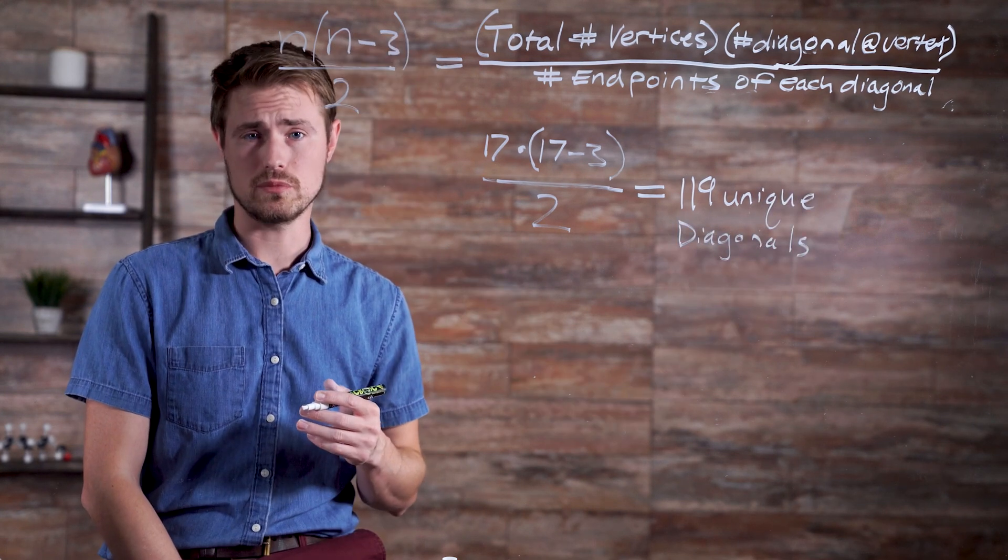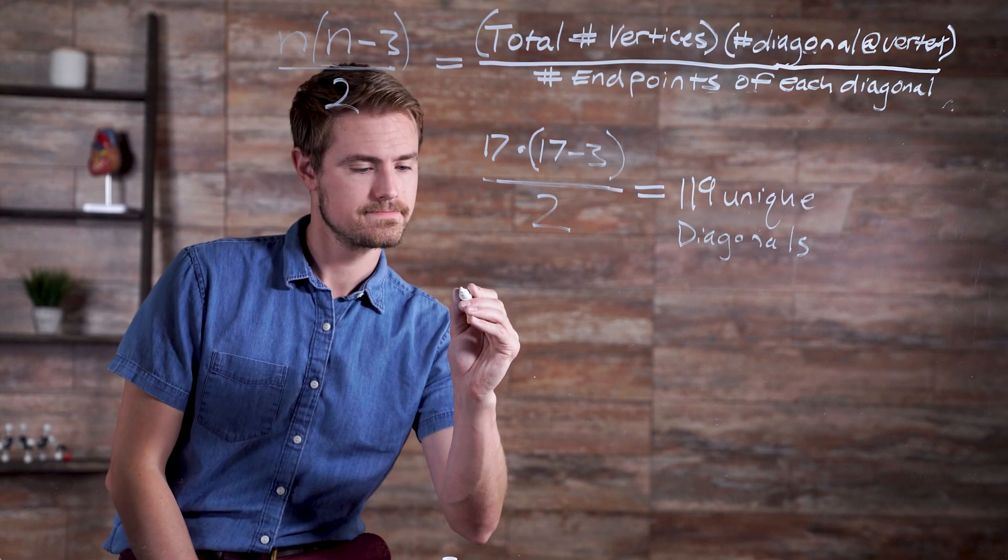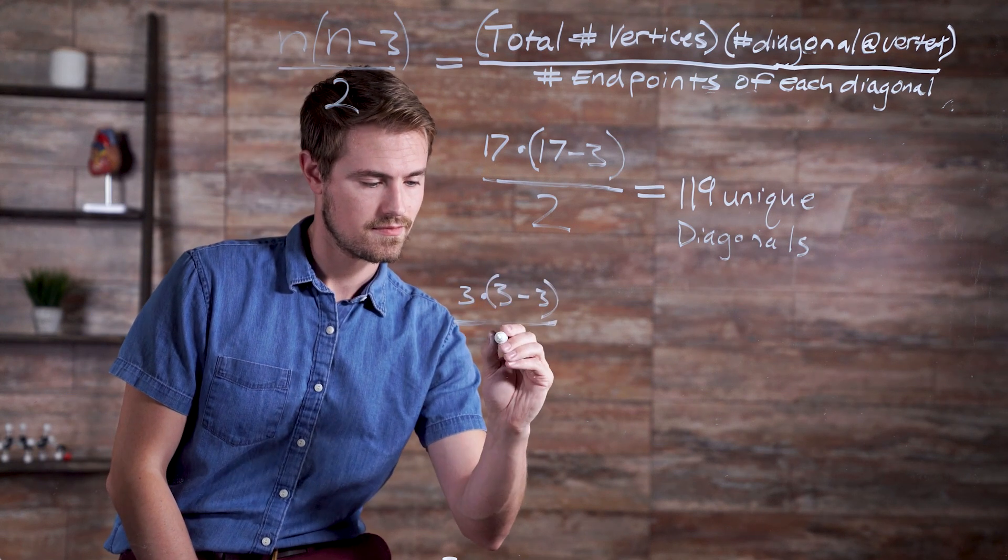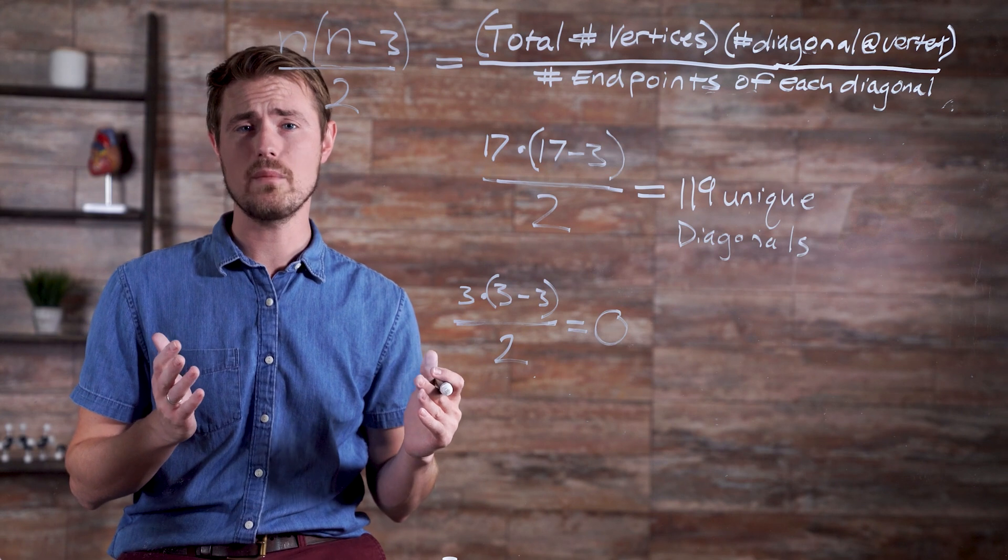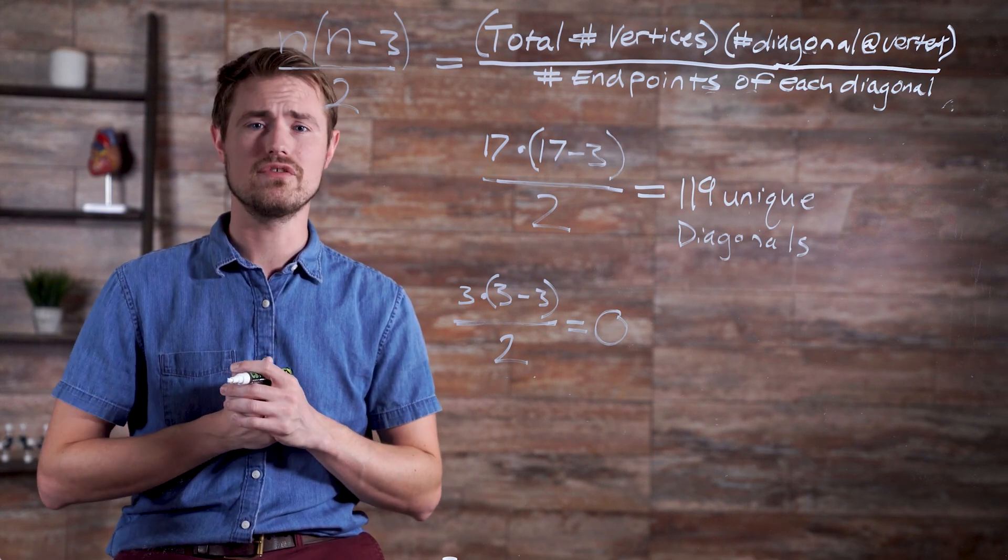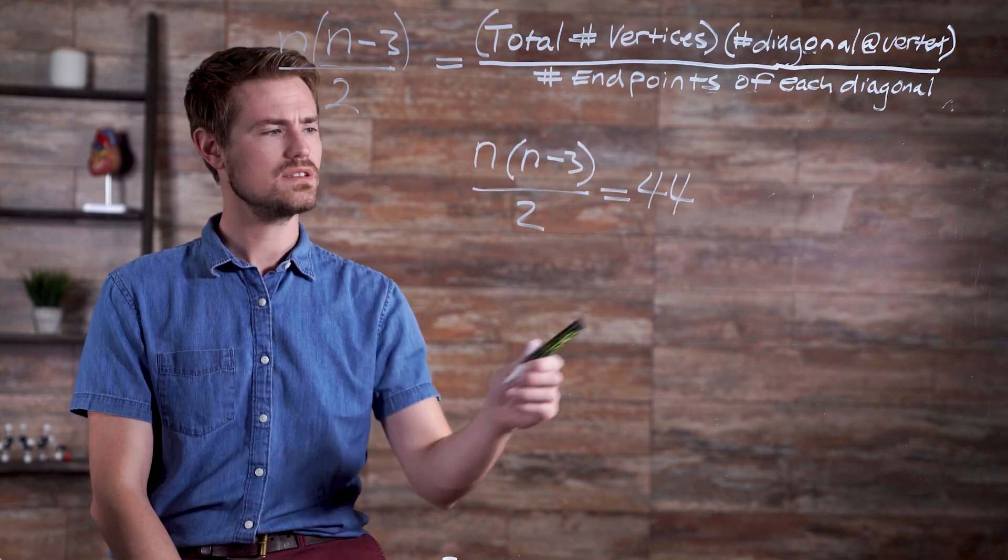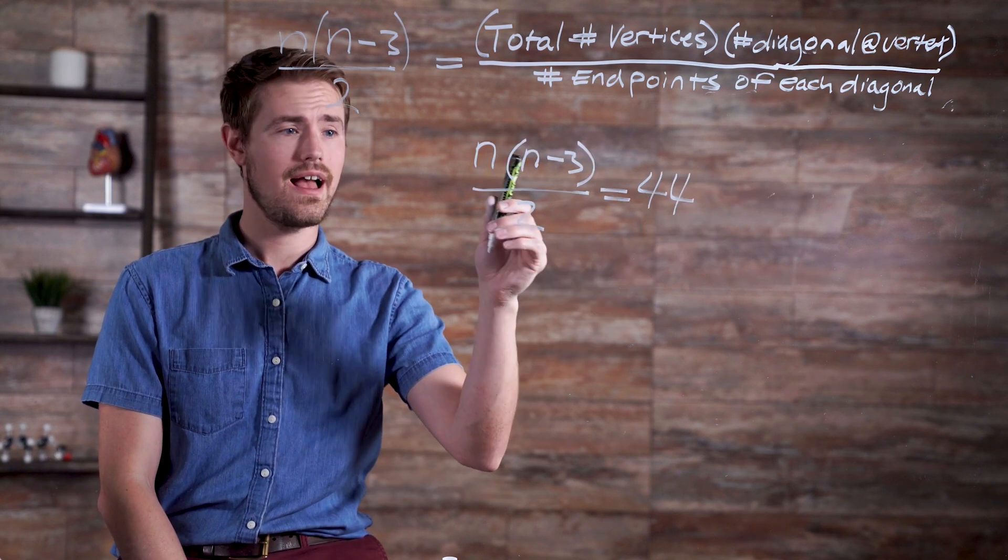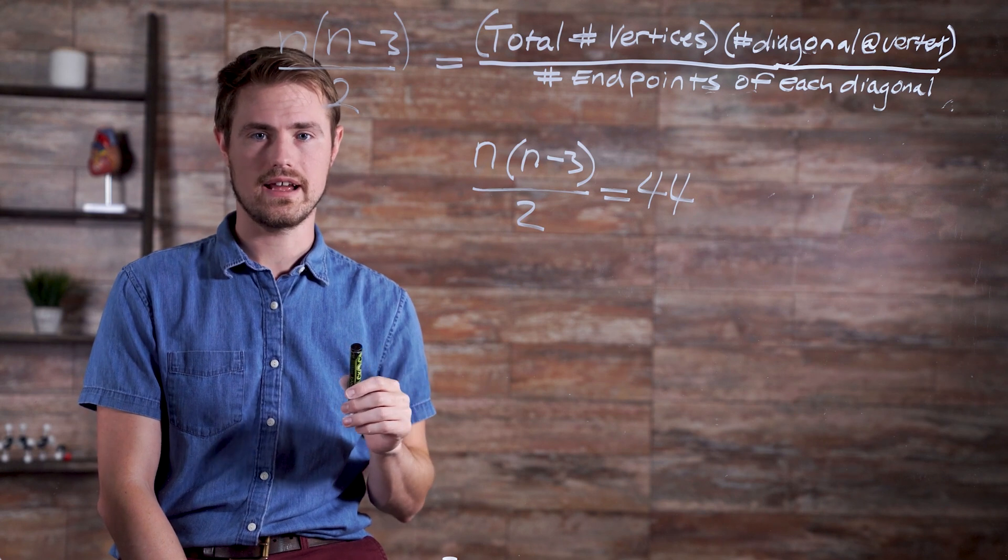We can also see, algebraically, that triangles have no diagonals. We can also figure out how many edges or vertices a polygon has by the number of unique diagonals. Suppose a polygon has 44 unique diagonals. How many edges does the polygon have?